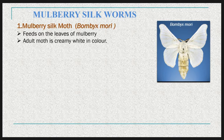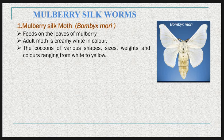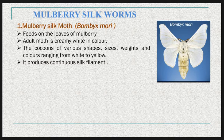The adult moth of Bombyx mori is creamy white in color. The cocoon of Bombyx mori varies in shape, size, weight, and color, ranging from white to yellow. Bombyx mori produces a cocoon with a continuous silk filament and therefore can be industrially reeled to produce raw silk.